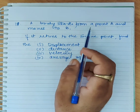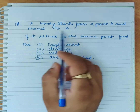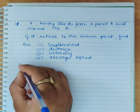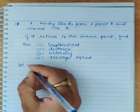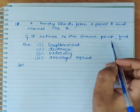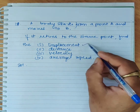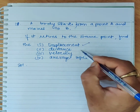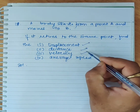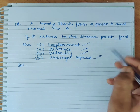A body starts from point A and moves to point B. If it returns to the same point, find the displacement, distance, velocity, and average speed.